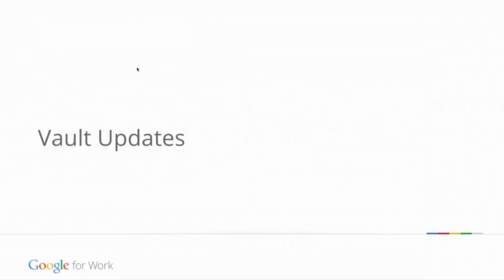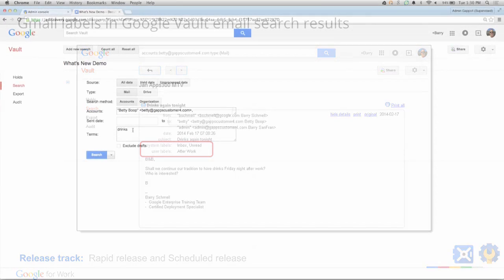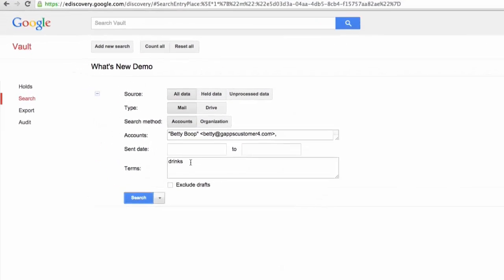Now let's look at the Vault updates for January. We'll start with Gmail labels in Google Vault email search results. To make it easier for Google Apps admins to locate specific emails in Google Vault search, Gmail labels are now included in search results. Admins can now view both system labels — the status of the message, such as unread, inbox, spam, sent — and the user-applied labels, such as 'after work' in this example. Let's see how this works in Vault's eDiscovery tool.